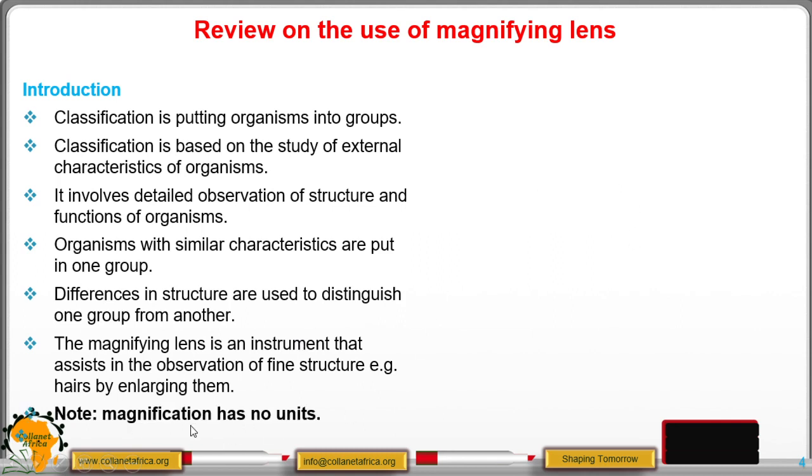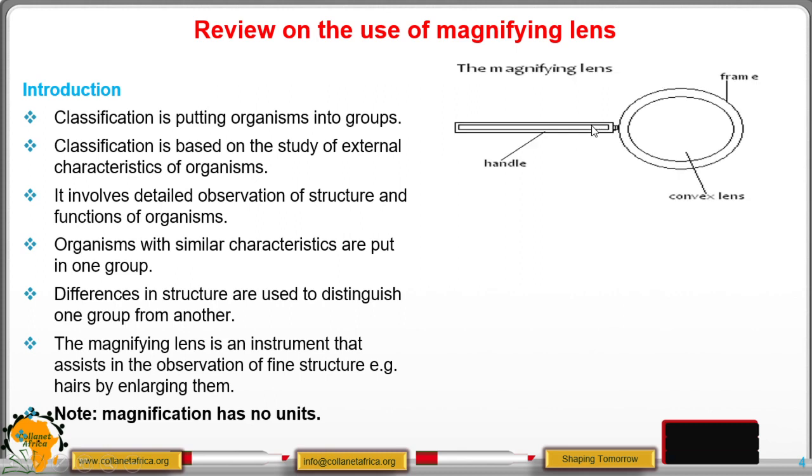Remember, magnification has no units. The magnifying lens has a handle and it has a frame onto which a convex lens is fixed. So this convex lens is the one that is involved in enlarging things.